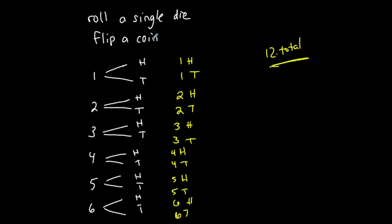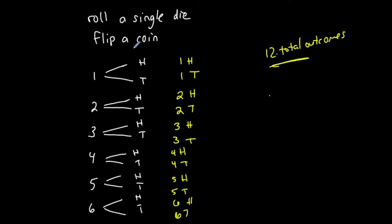If I want to write the sample space, it's a list of all these outcomes: one-head, one-tail, two-head, two-tail, three-head, three-tail, four-head, four-tail — and so on for all possible outcomes under these two conditions.